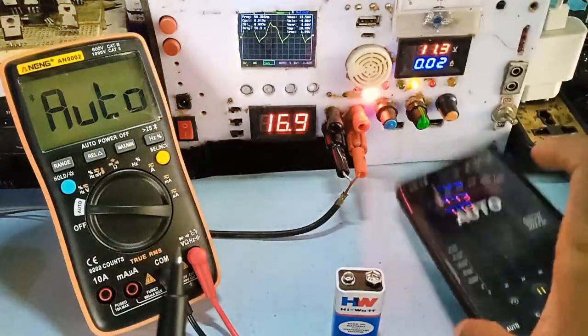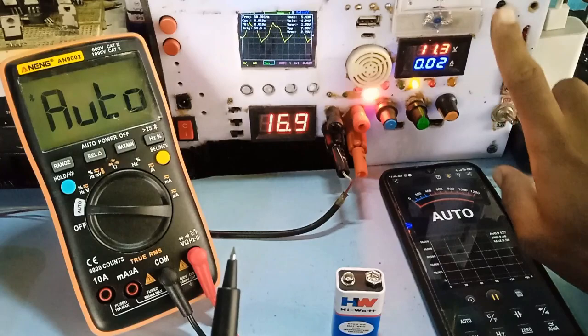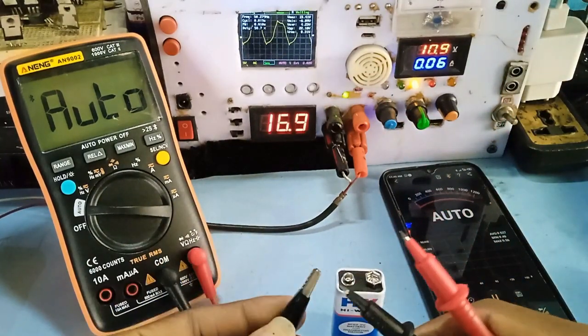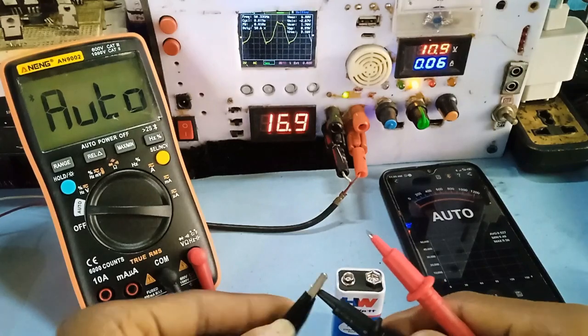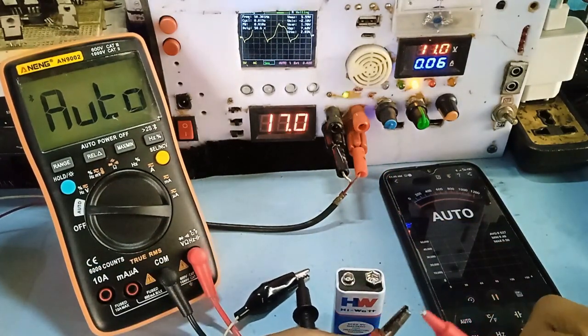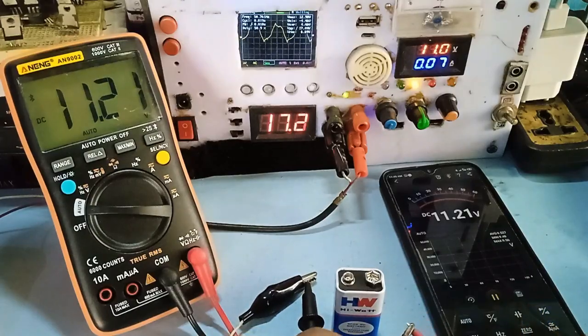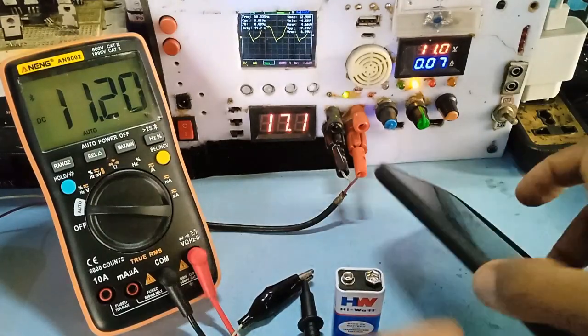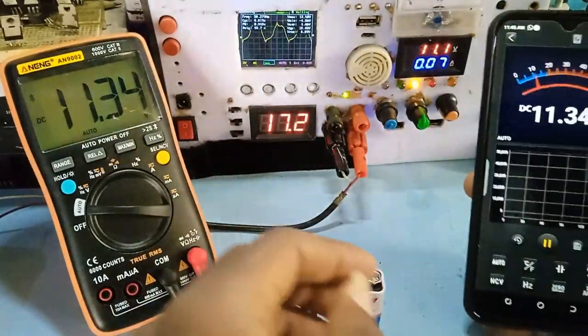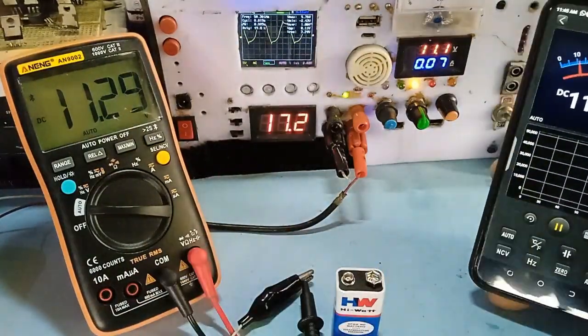Now I connected the system on auto mode to read the output voltage of my power supply. The result is also accurate even though we can spot some basic difference of 0.2 volts.